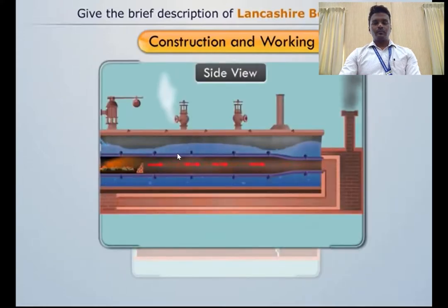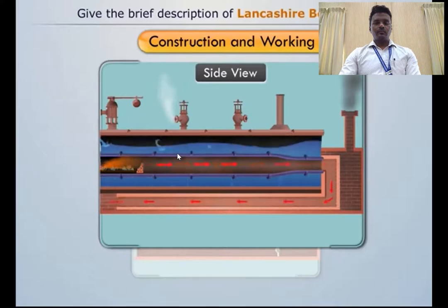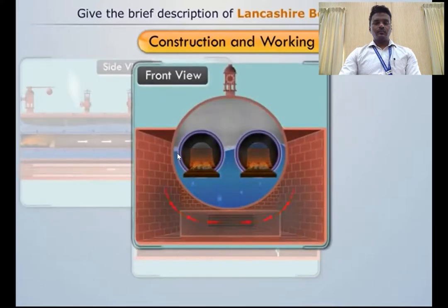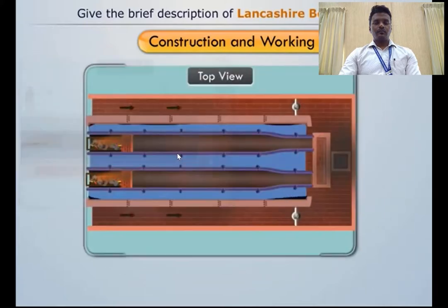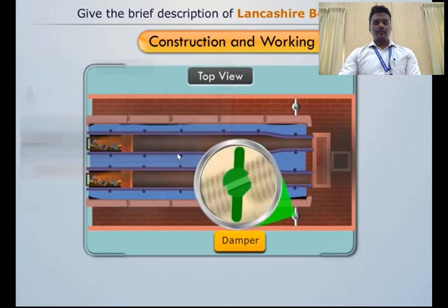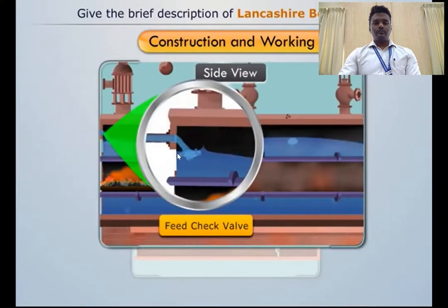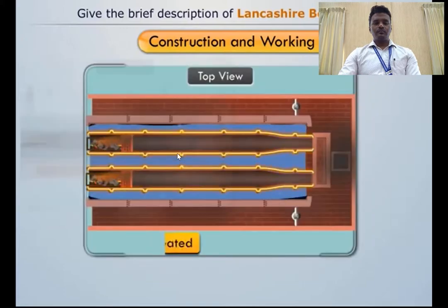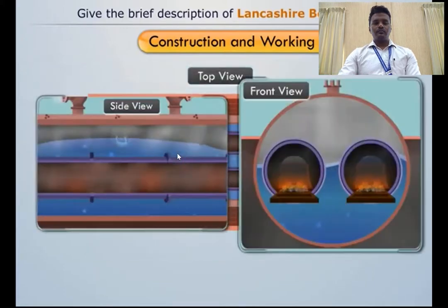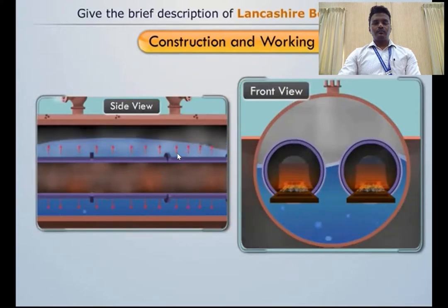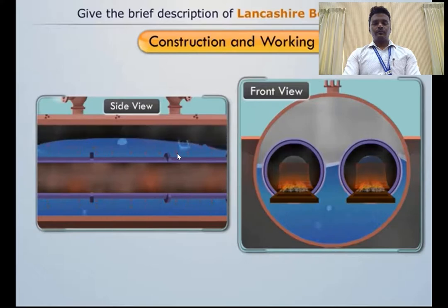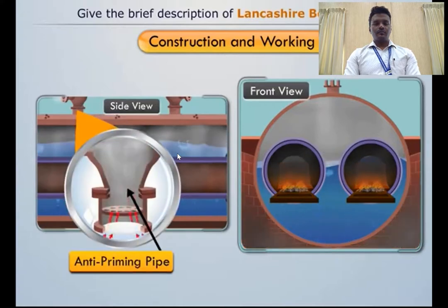Hot flue gases are allowed to pass through the downward channel towards the front end of the fire tubes. Then these gases pass through the side channel towards the rear end of the fire tubes and finally escape through the chimney. There are dampers at the end of each side channel to regulate the airflow. A feed check valve is used to feed water uniformly to the boiler shell.